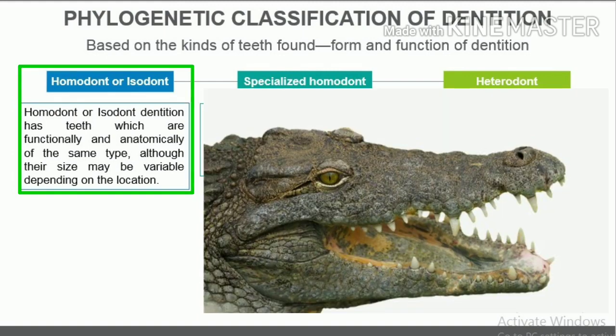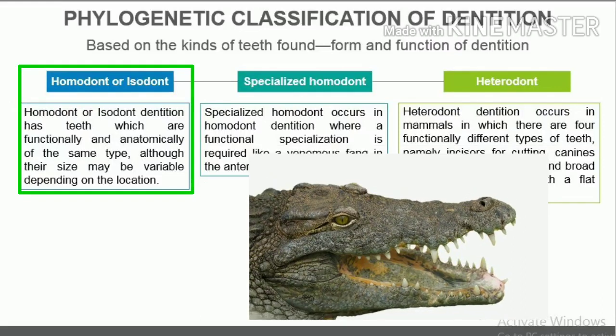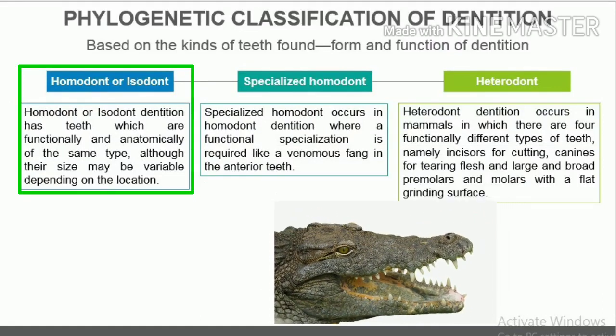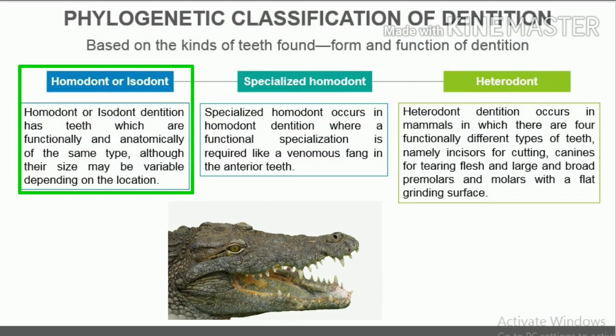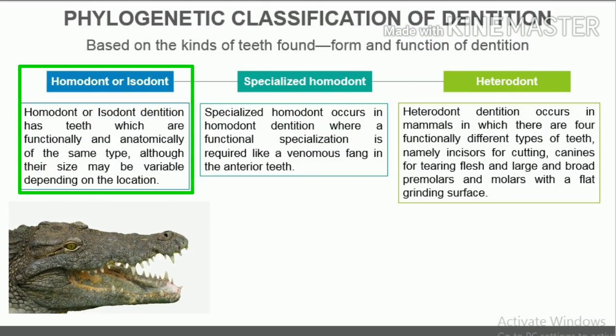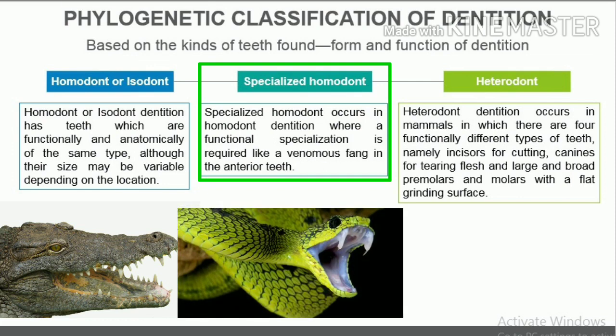Homodont or isodont dentition has teeth which are functionally and anatomically of the same type, although their size may be variable depending on location. Examples include fishes, amphibians, and reptiles. Specialized homodont occurs where a functional specialization is required, like a venomous fang in the anterior teeth — for example, venomous snakes.